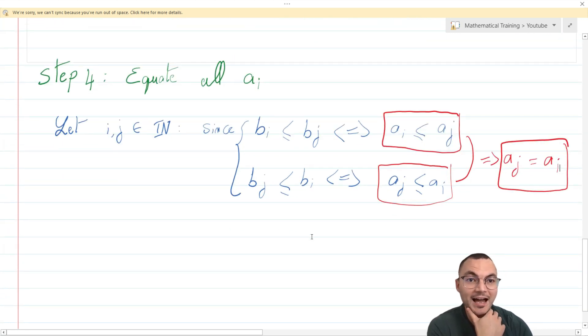Step number four: equate all the ai's. Let's take two integers i and j. Since all values of the bi series are equal, we can say that bi ≤ bj, which is equivalent to ai ≤ aj. We apply the same property the other way around. Bj ≤ bi, which is equivalent to aj ≤ ai. And here you see where we are going. This implies that ai = aj. Finally, we did it, and this is the complete answer for this exercise.